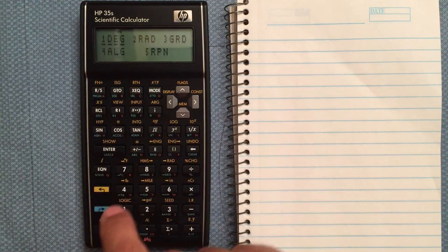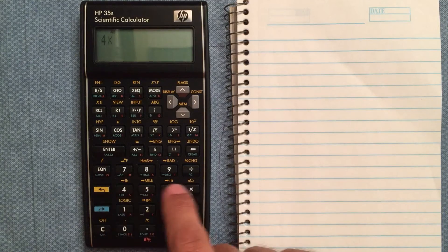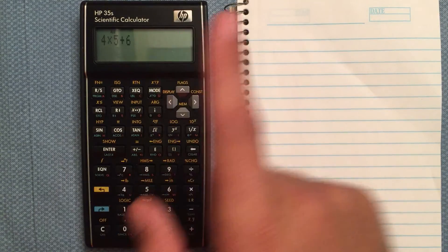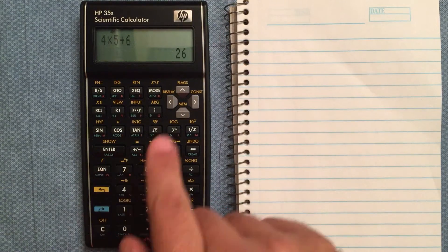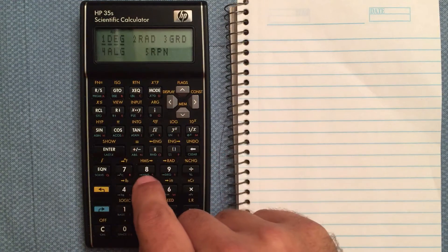Algebraic mode is what most people are used to on calculators, where you are able to do 4 times 5 plus 6, etc., hit enter and you get your answer. Anyways, I'm going to go back to RPN.